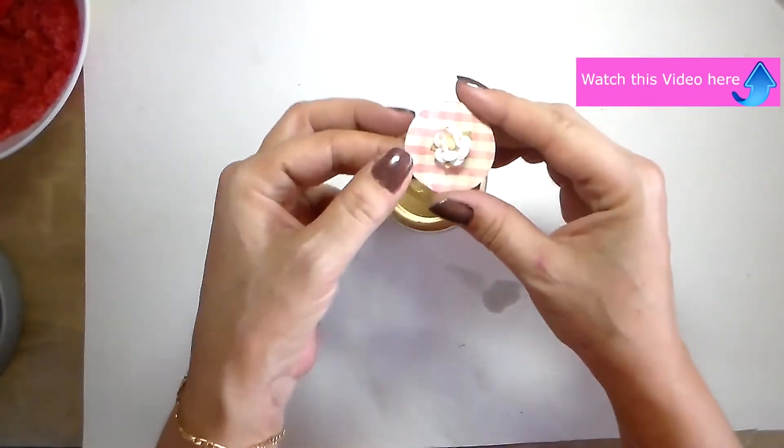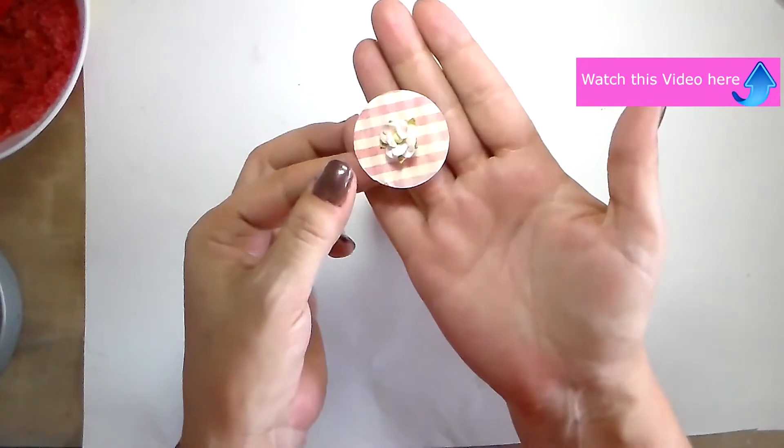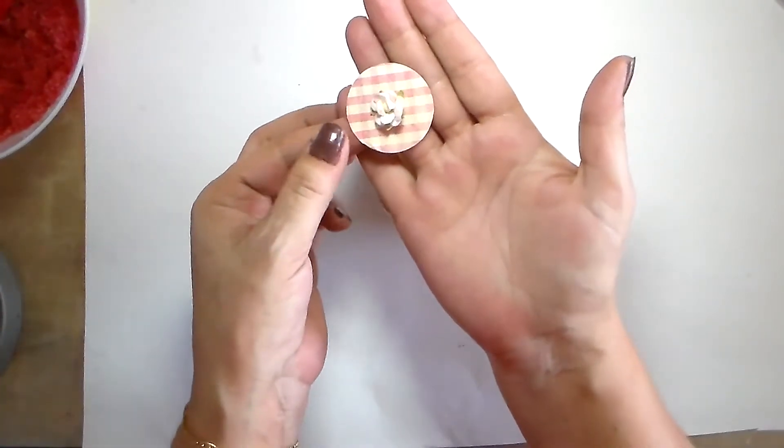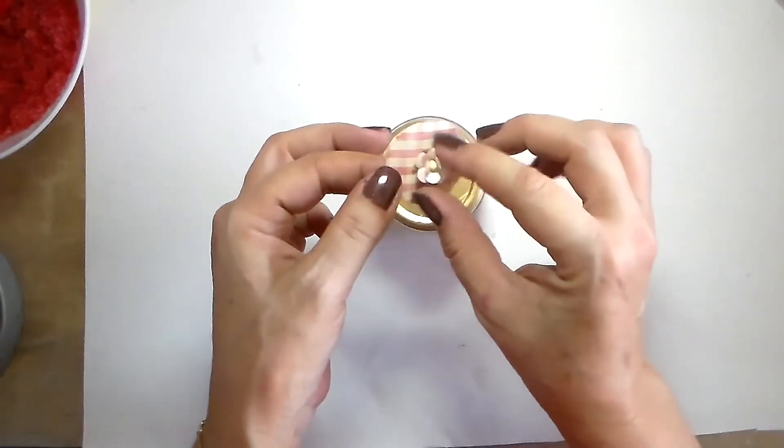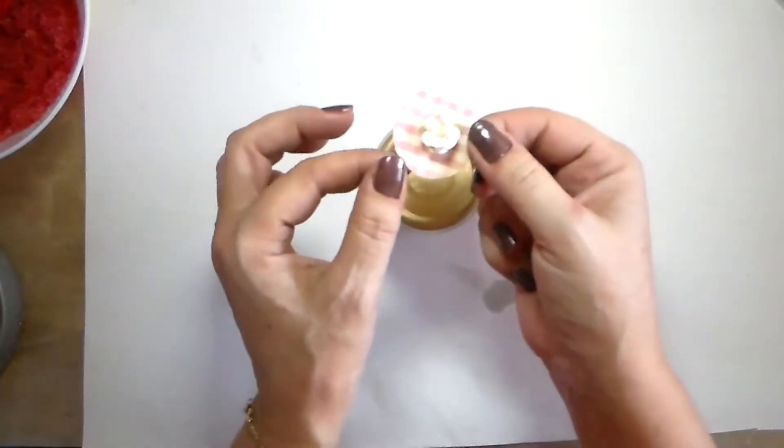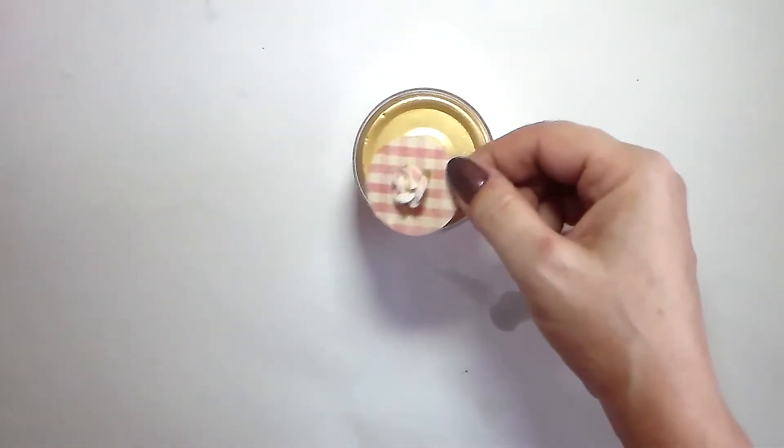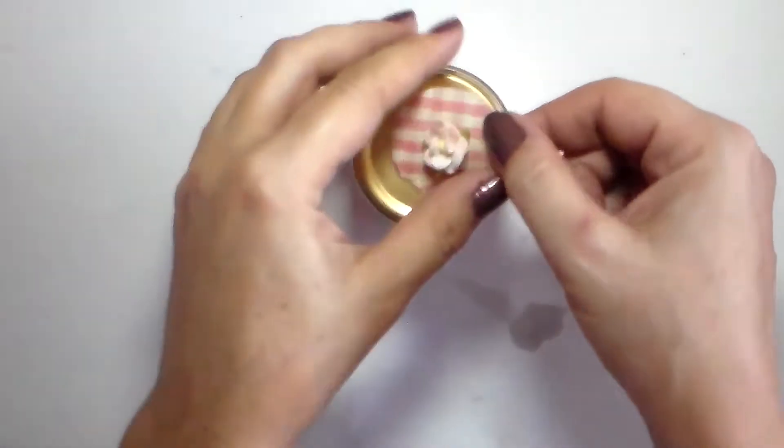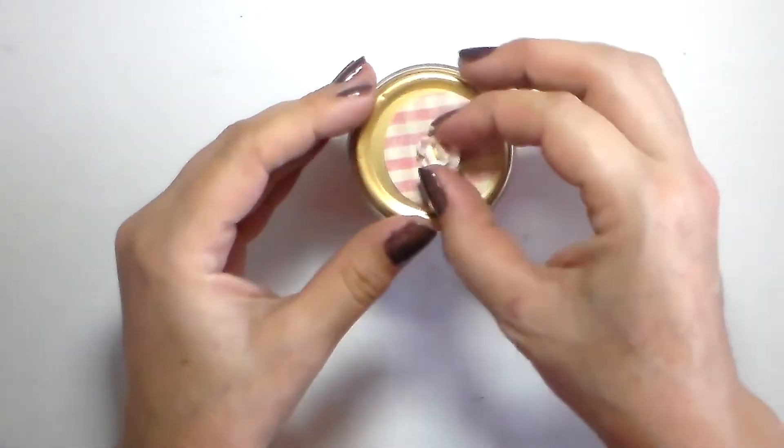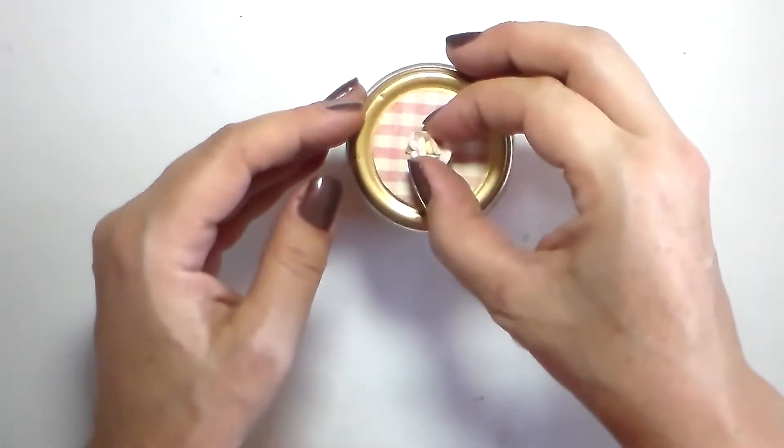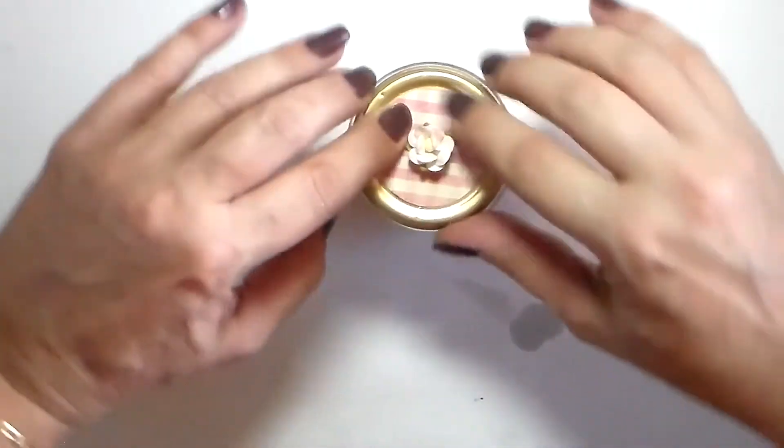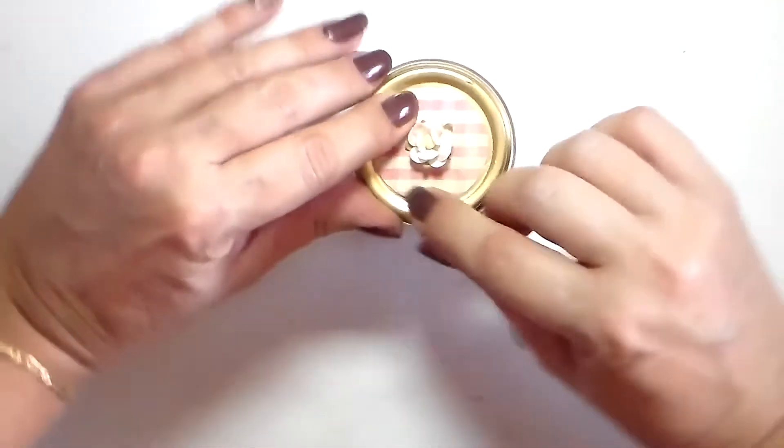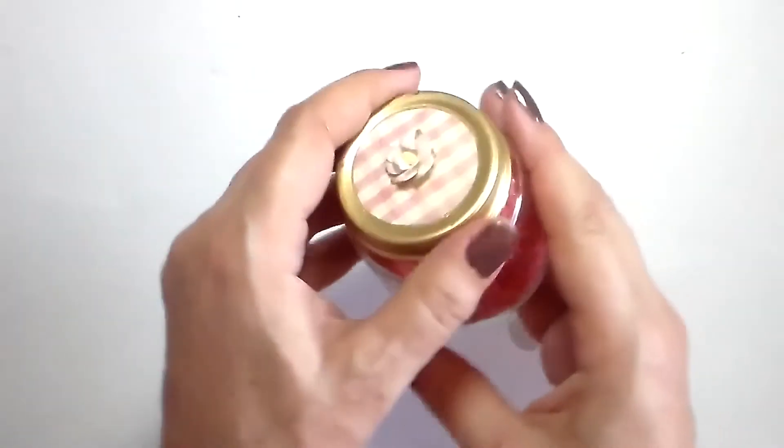We're going to do some decoration. What I have done here is I've already cut out and punched out a circle. I really like the color this one has, it's really cute. I'm going to put it on top. I've put double-sided tape on it and a little paper flower. I'm going to center it.